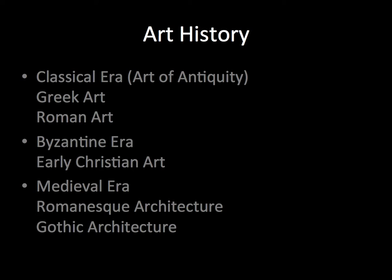In this second installment of art history, we're going to go over the classical era, the Byzantine era, and the medieval era. The classical era covers the art of antiquity — Greek art, with Roman art taking a lot from the ancient Greeks. The Byzantine era is basically early Christian art, and then we have the medieval era with Romanesque and Gothic architecture.